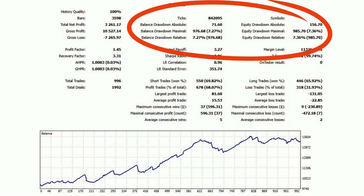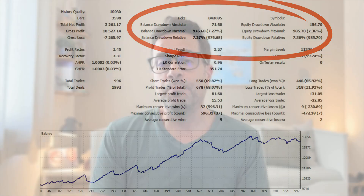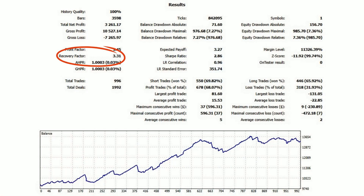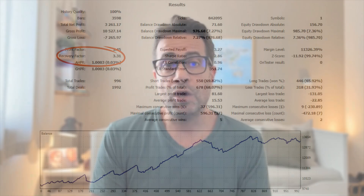Number three is maximum drawdown — the biggest drop from peak to valley. Below 10% is considered conservative; over 30% is risky and you could face a margin call depending on your leverage and margin requirements. Number four is recovery factor — how efficiently the strategy recovers after a loss. For example, a $10k profit with a $2k drawdown gives a recovery factor of 5, which is strong. Anything below 2 is weak, and below 1 is a losing strategy.